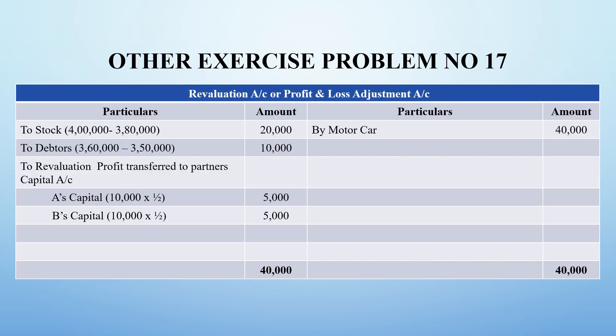First, we have to prepare the revaluation account or profit and loss adjustment account. Looking at the stock: 4,00,000 is adjusted to 3,80,000, so the asset value decrease is added to the debit side. The debtors are adjusted from 3,60,000 to 3,50,000, so 10,000 has reduced. The motor car has increased by 40,000 rupees. Asset value has increased, so it goes to the credit side. The balancing figure of 10,000 is shared by A and B equally — that is 5,000 each. The grand total on both sides is 40,000 rupees.